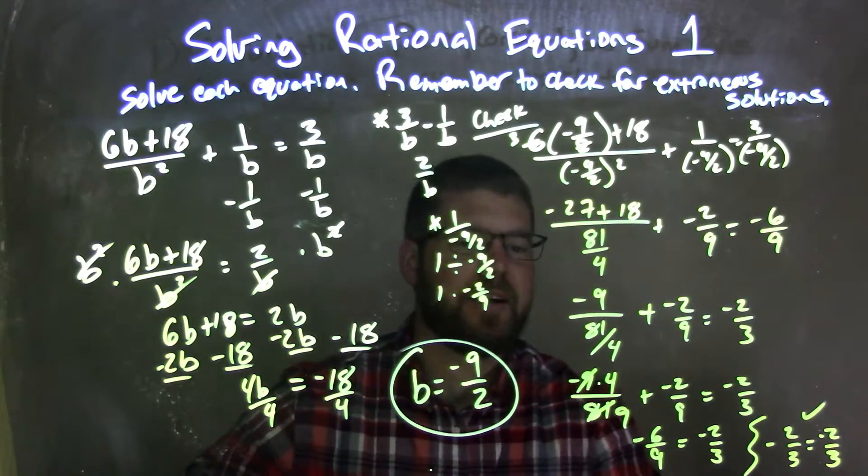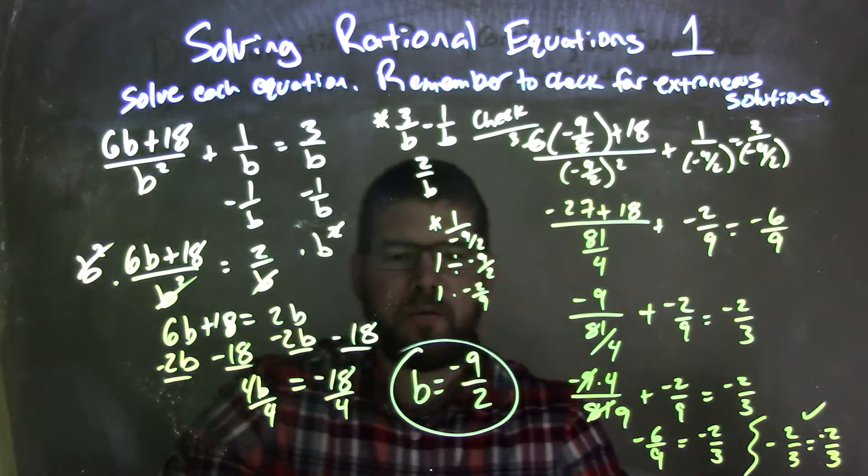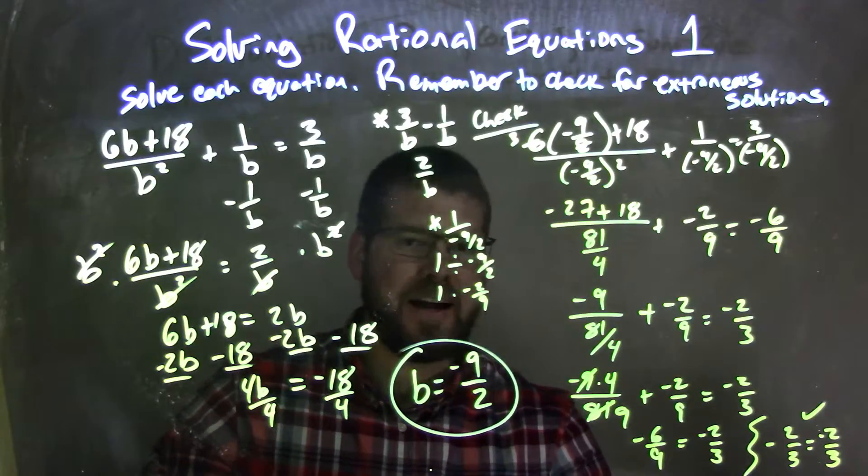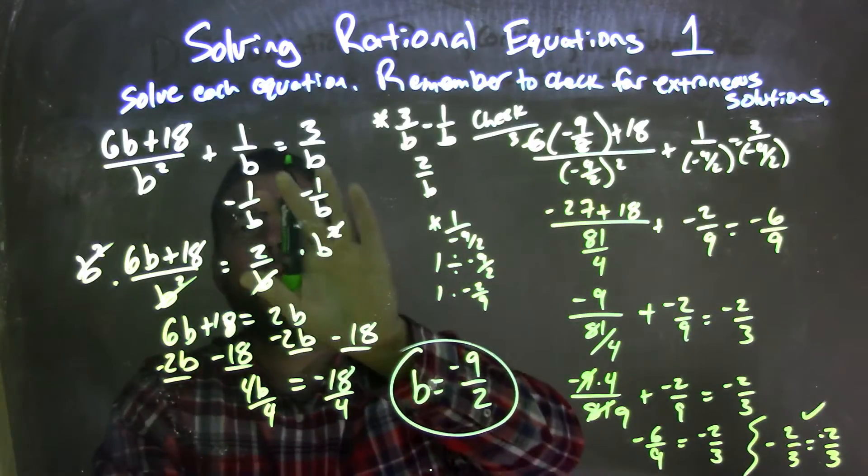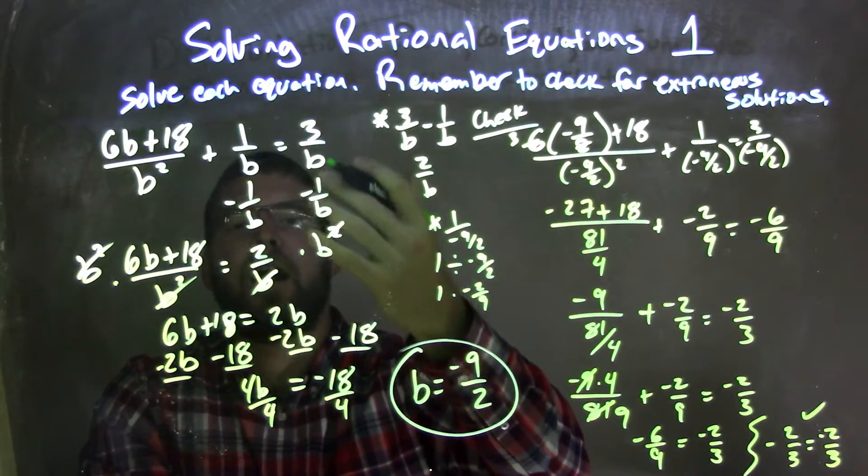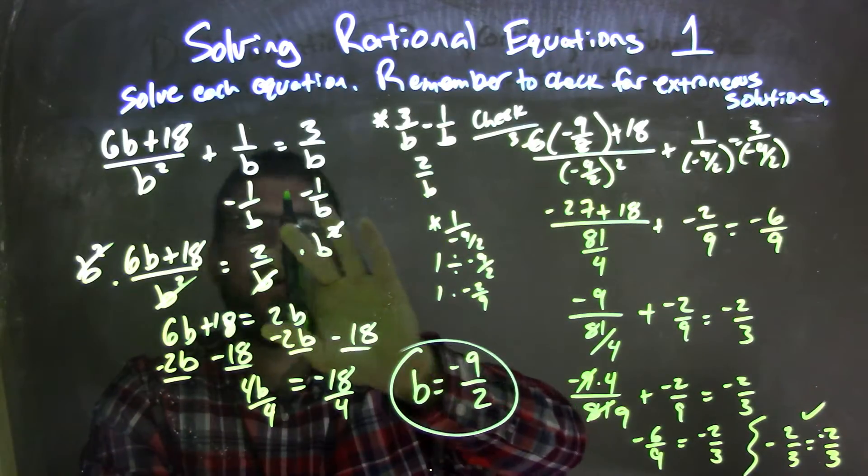And so our left and right-hand side are equal, and so we confirm our final answer, which is b equals negative 9 halves. So let's recap, we're given our equation here, I subtracted 1 over b to both sides, bringing everything that over to the right, giving me 2 over b to the right.